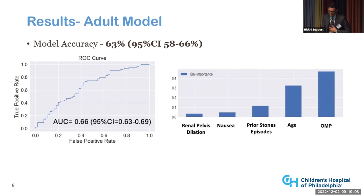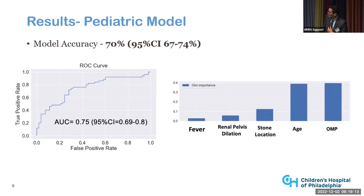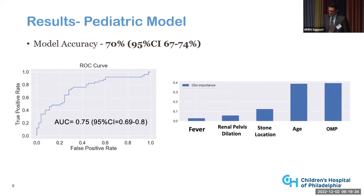Our pediatric model has slightly better accuracy and a better area under the curve of 0.75. The features are a little different — OMP, age, and renal pelvic dilation are still present, but instead we have stone location and fever. We did the same test running just OMP and age or just OMP, and again the model didn't perform as well because of those edge cases where OMP is inconclusive.